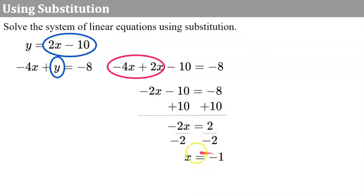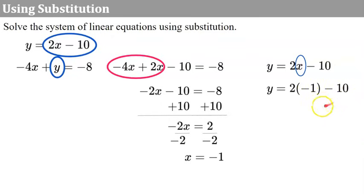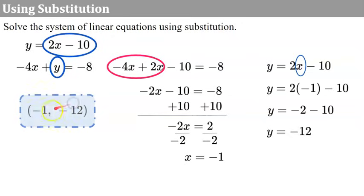Now we're going to take this value and plug it in to either of these equations to solve for y. I'm going to use the first equation and replace x with negative 1. So now we have y equals 2 multiplied by negative 1 subtract 10. 2 times negative 1 is negative 2, subtract 10 is negative 12. So our ordered pair is negative 1, negative 12.